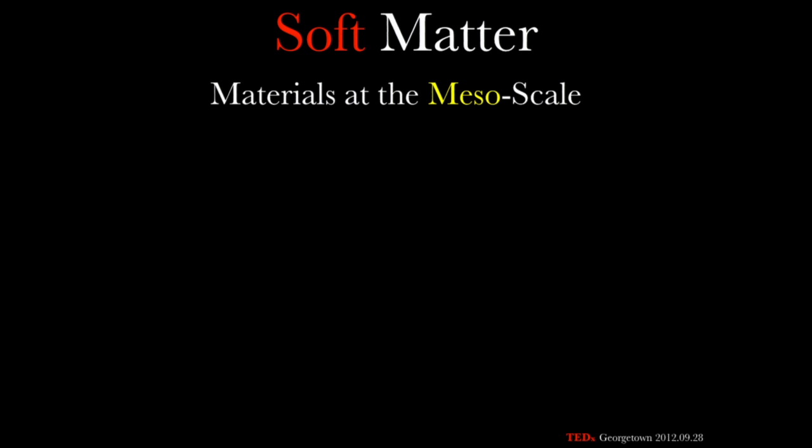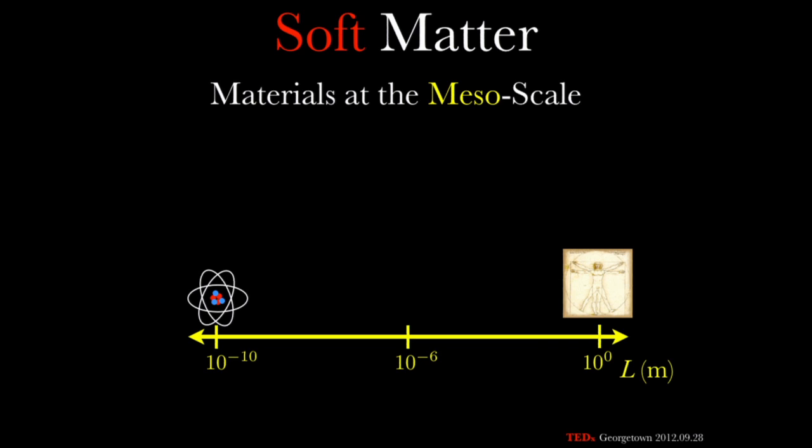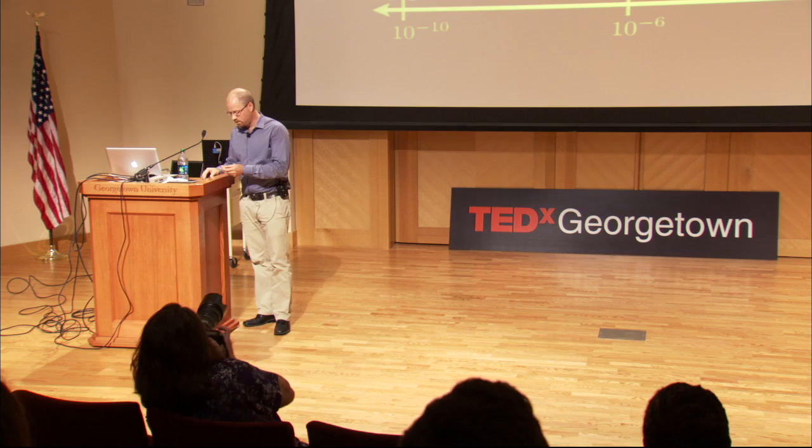Let's step back for a moment and say there are materials at the mesoscale. People here take the classics — they know what meso means: the middle. The middle length scale of the world. 10 to the minus 10 meters is an atom; 10 to the zero meters is roughly a meter — that's us. What sits in the middle? The middle of the scale is stuff that I call soft matter — the mesoscale materials. Inside of this little egg of goodness is all we need to know to understand soft matter.